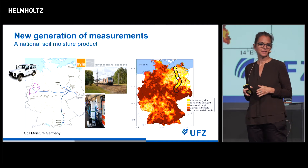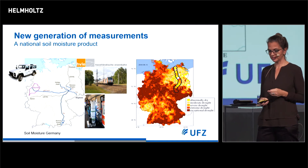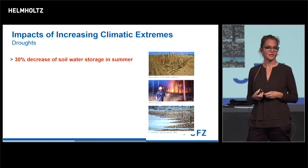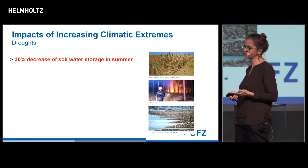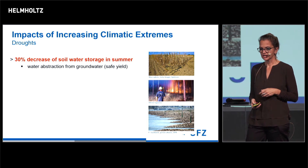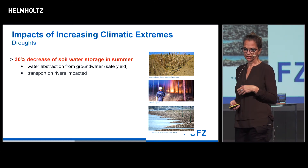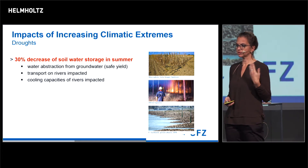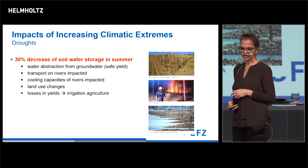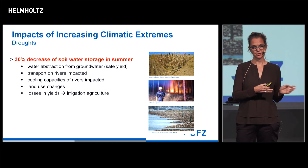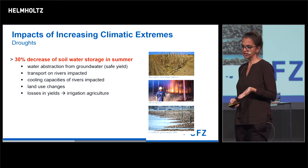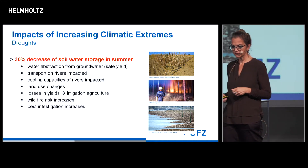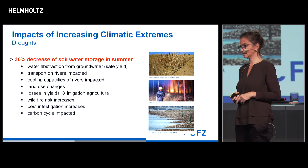We strongly believe this product is of great interest for different economic sectors. Drought means a strong decrease in soil moisture, with many indirect implications: you need more water from groundwater, there are impacts on river transport, reduced cooling capacities, changing land use, increased yield losses, irrigation requirements, increasing fire risks, increasing pest infestations, and impacted carbon balances.